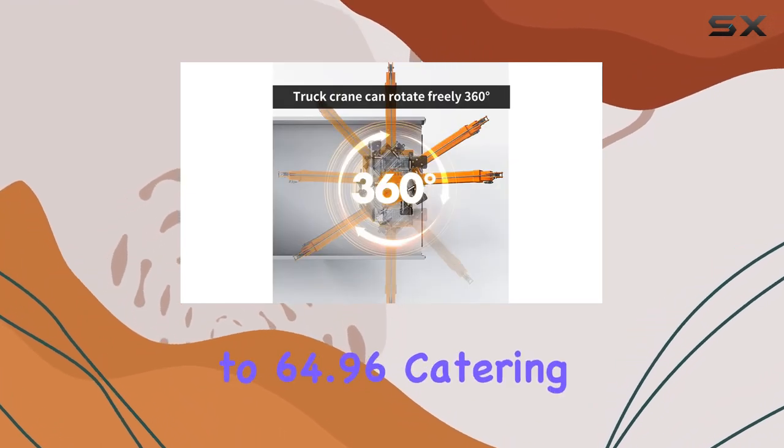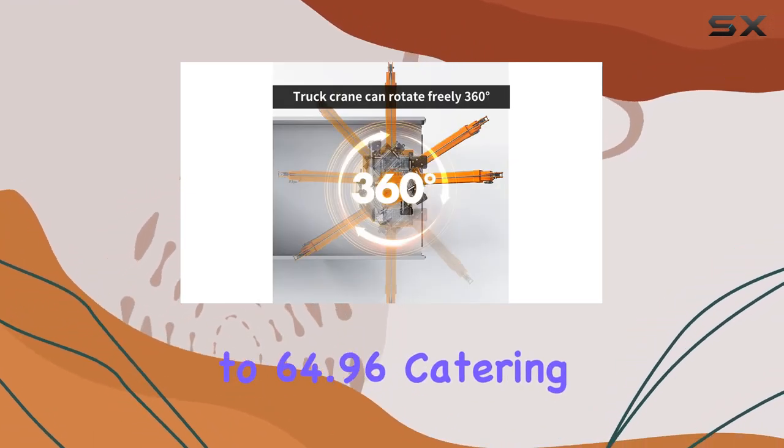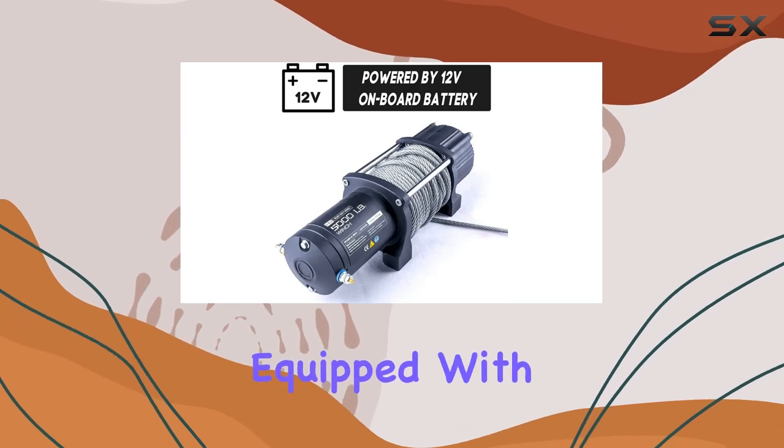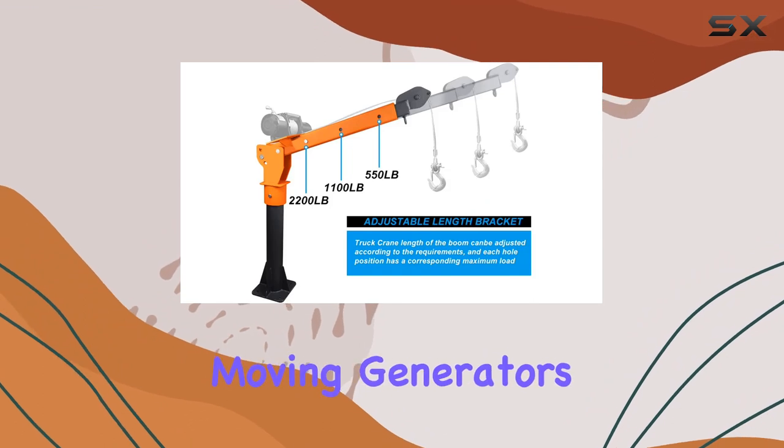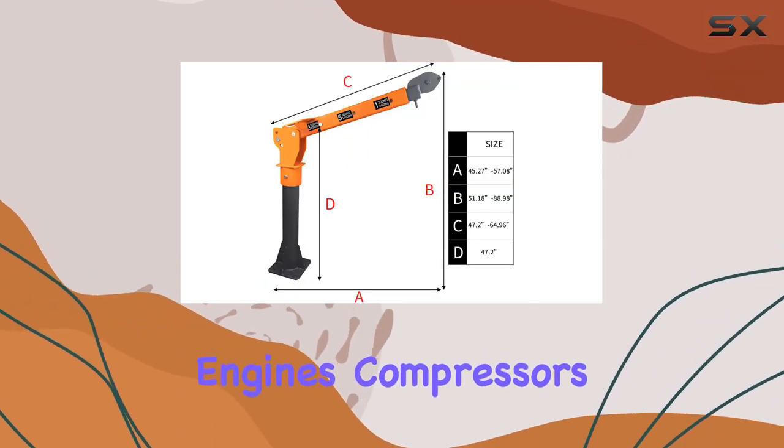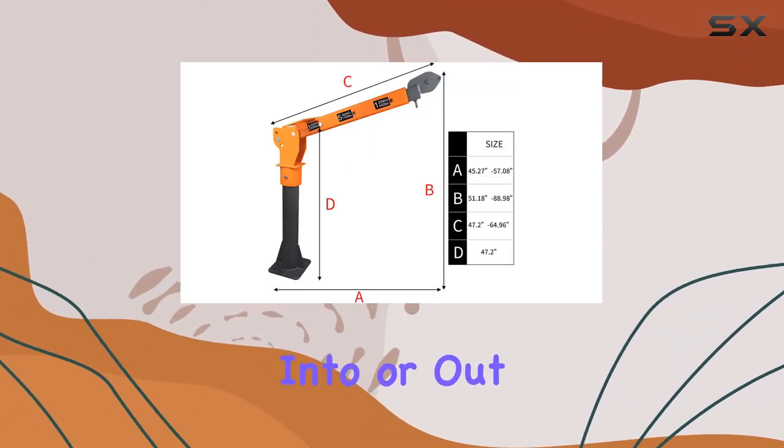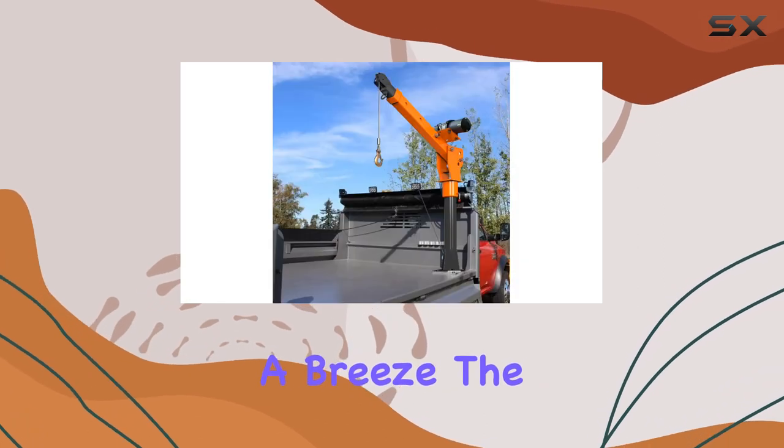Equipped with a powerful 5,000 pounds winch, this crane is a workhorse. Moving generators, engines, compressors, and small equipment into or out of your truck bed becomes a breeze.